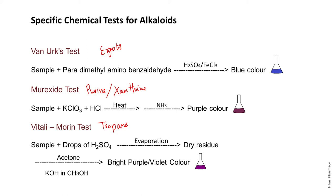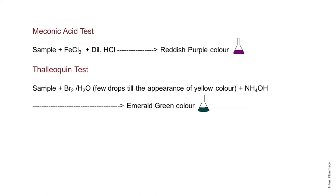Third comes the Vitali-Morin test, which is done for the identification of tropane alkaloids. First, a few drops of sulfuric acid are added to a small amount of the sample, then after evaporation a dry residue is obtained. The residue is dissolved in acetone and methanolic potassium hydroxide is added. If the sample shows a bright purple or violet color, that indicates a positive Vitali-Morin test confirming the presence of tropane alkaloid.